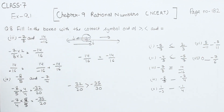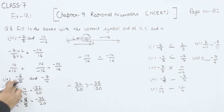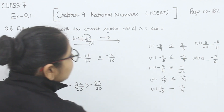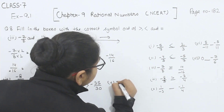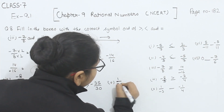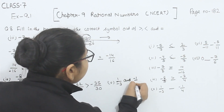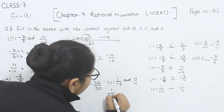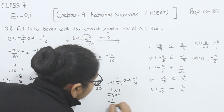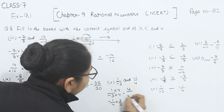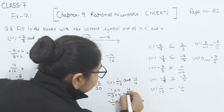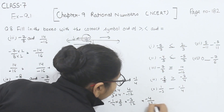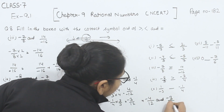In negative numbers, the smaller absolute value is the greater number. So minus 32 by 20 is greater, and this represents minus 8 by 5, so minus 8 by 5 is the greater number. Now comes part 5. In part 5, we have 1 by minus 3 and minus 1 by 4. Multiplying by each other's denominator: 4 by minus 12 and 3 × 1 = 3 with 4 × 3 = 12. Writing the negative in the numerator gives minus 4 by 12 and minus 3 by 12.